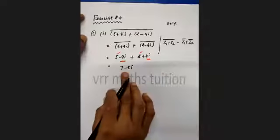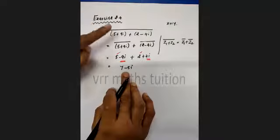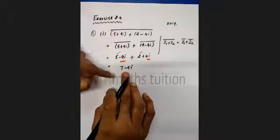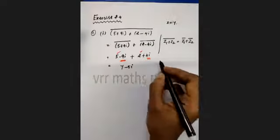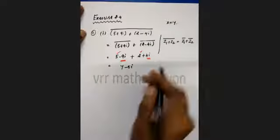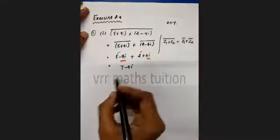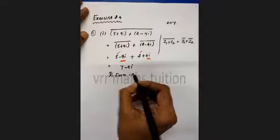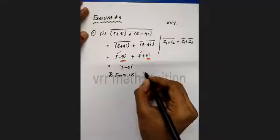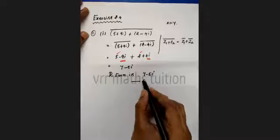So the result is 7 minus 5i. This is the rectangular form. Division number 1 is completed.